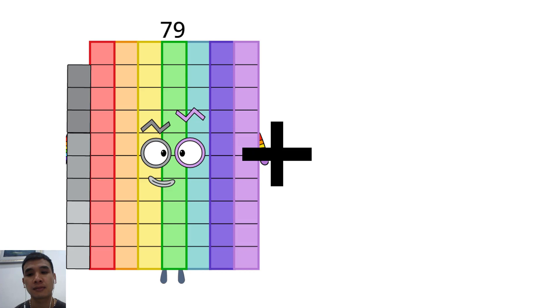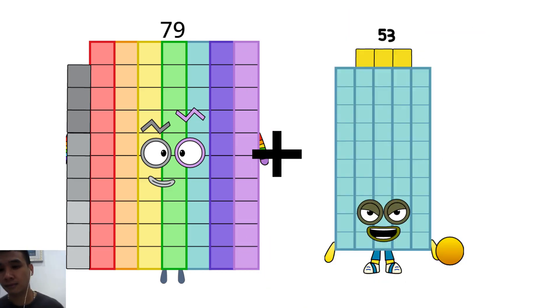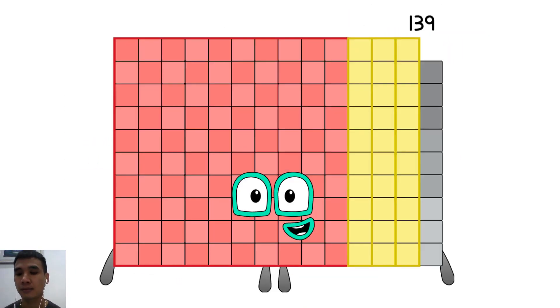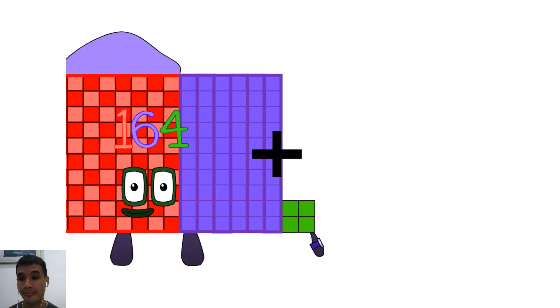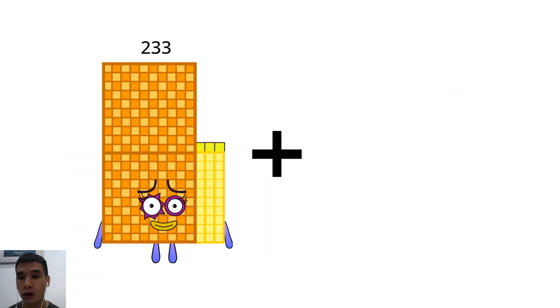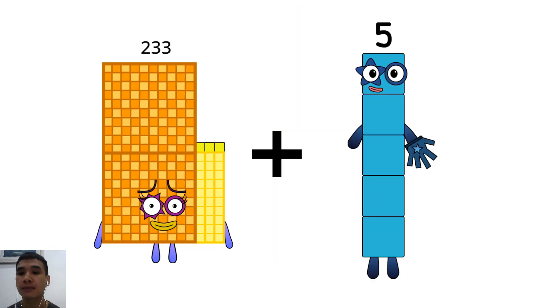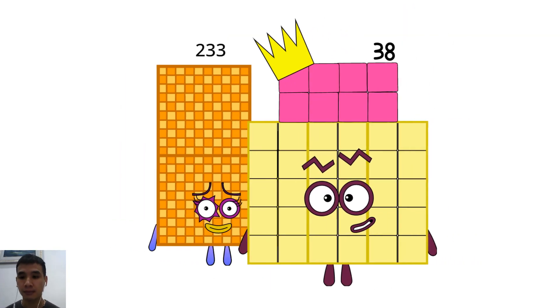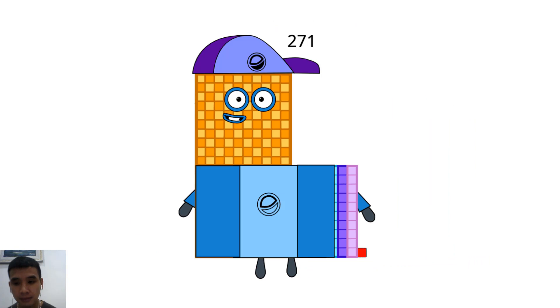79 plus 60 equals 139. 233 plus 38 equals 271.